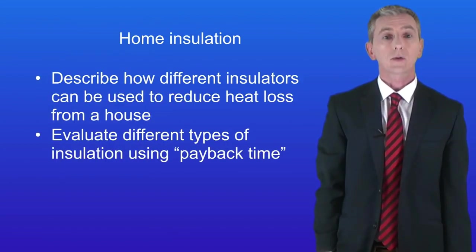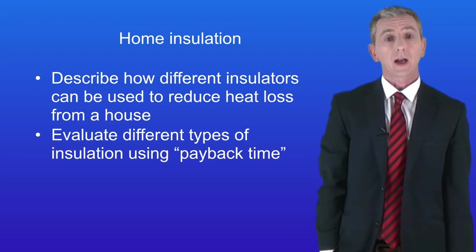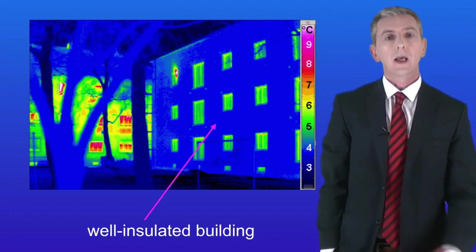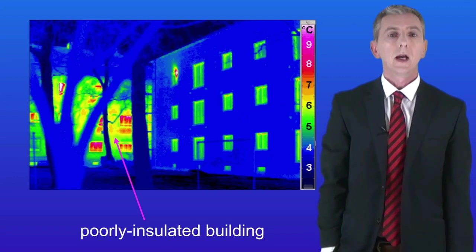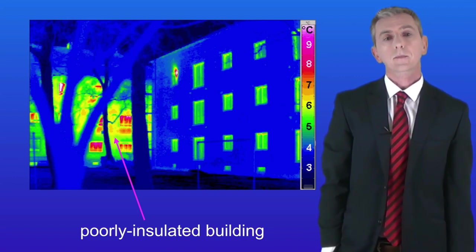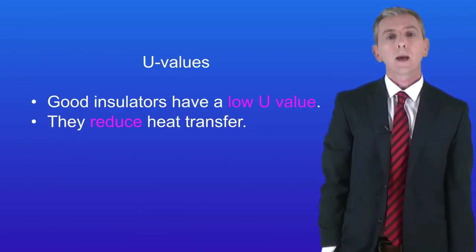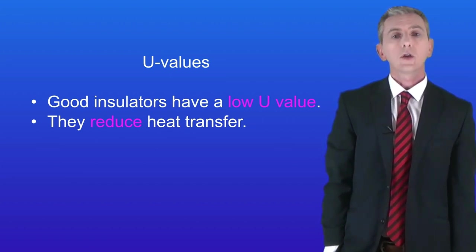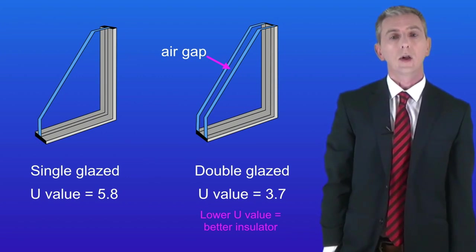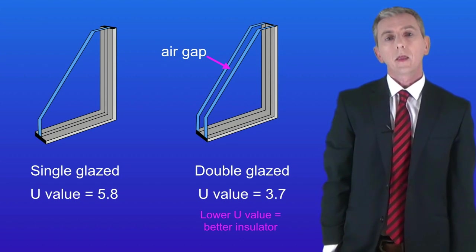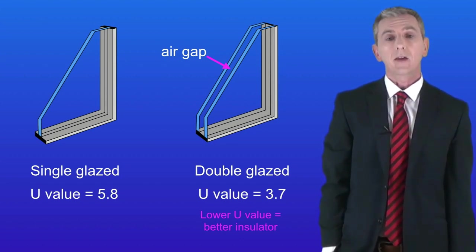By the end of this video you should be able to describe how different insulators can be used to reduce heat loss from a house, and evaluate different types of insulation using the idea of payback time. This picture shows two different buildings using an infrared camera to see how much heat energy is passing out. A well insulated building releases very little heat through the walls or windows, whereas a poorly insulated building releases a lot of wasted heat energy. We can evaluate the effectiveness of different insulators by looking at their U values — good insulators have a low U value. The double glazed window has a lower U value than the single glazed window, telling us that double glazing is a better insulator because it has a layer of air trapped between the panes of glass. Air is a poor conductor of heat.